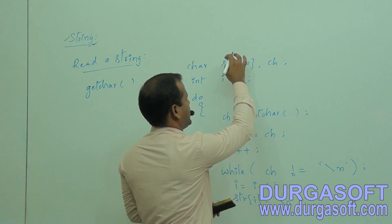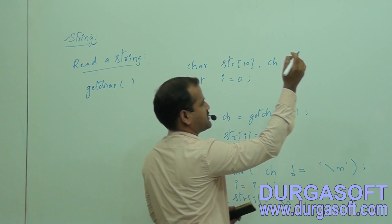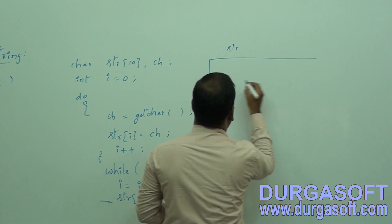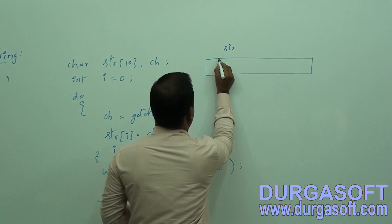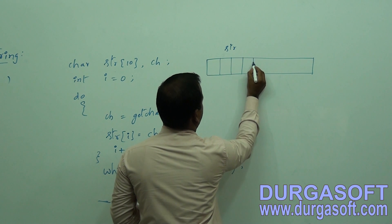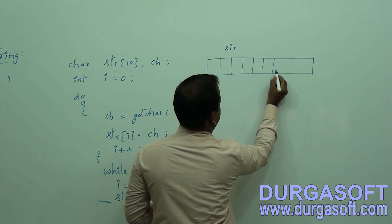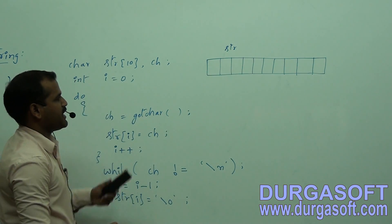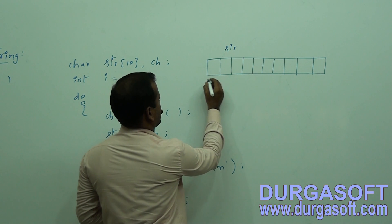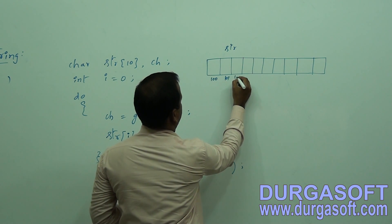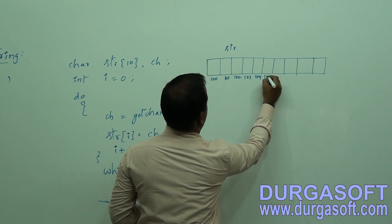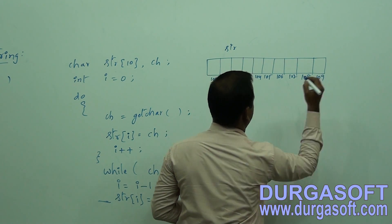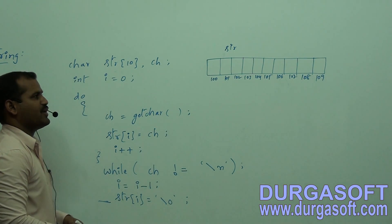In this declaration part, a string is declared with 10 character size. After this declaration, the storage looks like 10 bytes of memory allocated. For this string, 10 bytes — let us assume the addresses will be 100, 101, 102, 103, 104, 105, 106, 107, 108, 109 as the addresses of the string's individual elements.